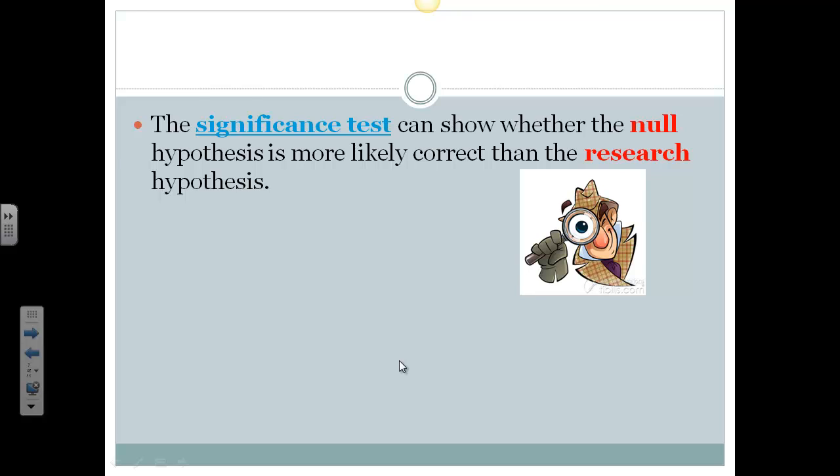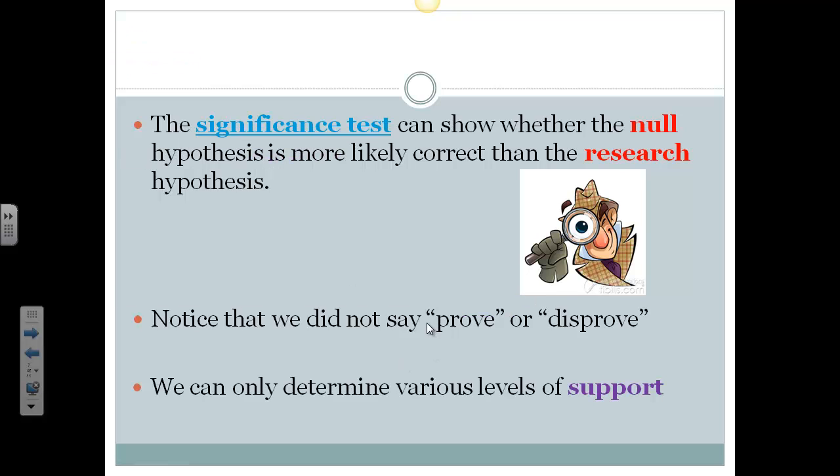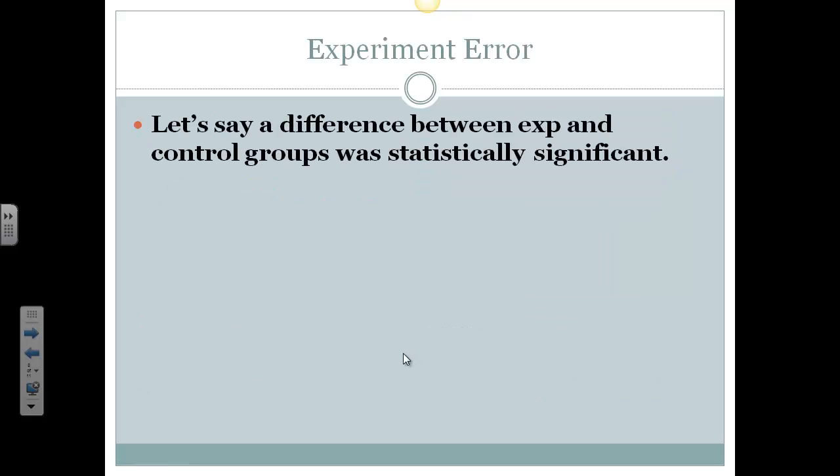Now notice we didn't say prove or disprove because we can't. It's very difficult to prove something or disprove something. Well, probably easier to disprove it in psychology. But we're going to use terms like support or fail to support. Do we support the hypothesis or do we reject the null hypothesis? And let's say we did find a difference between the experimental and control groups, that there was a statistically significant difference in scores, that the experimental group people scored better than the control group people. Are there some mistakes that we can make?